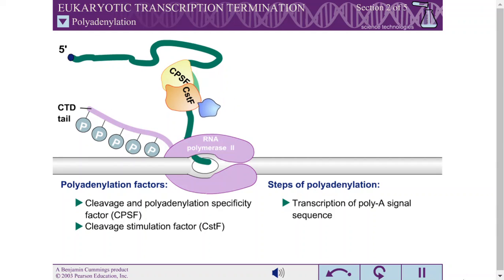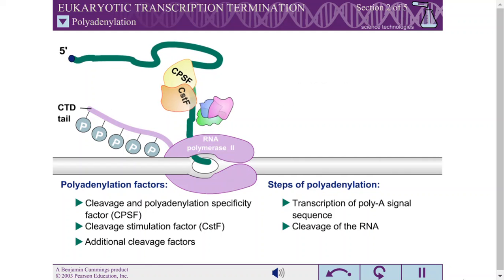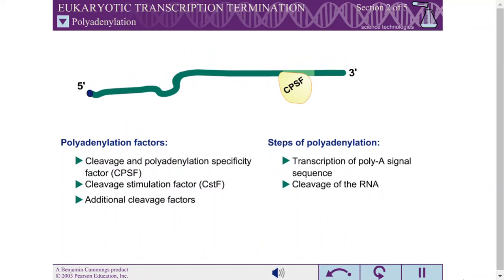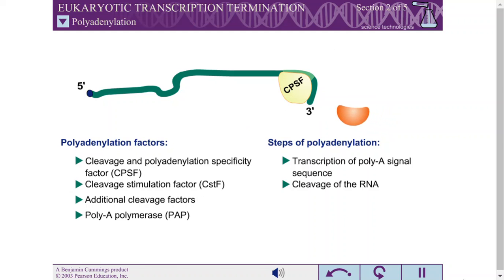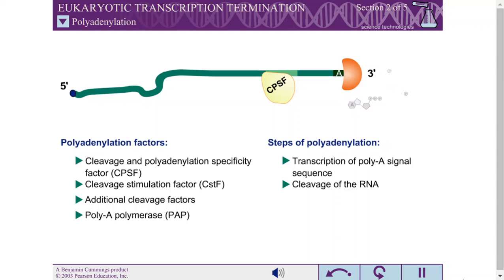Once CPSF and CSTF are bound to the RNA, additional cleavage factors are recruited as well, leading to the cleavage of the RNA. An enzyme called polyA polymerase is then recruited to the cleaved RNA. PolyA polymerase adds about 200 adenines to the new 3' end produced by the cleavage of the RNA. PolyA polymerase uses ATP as a source of adenine.